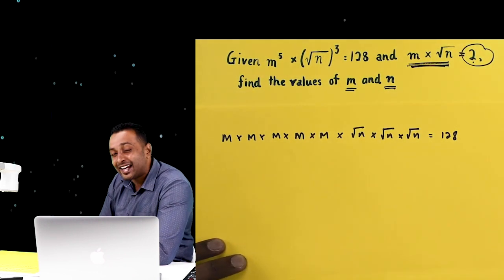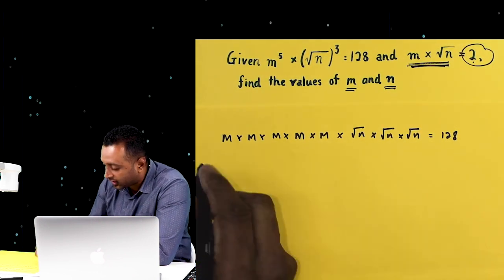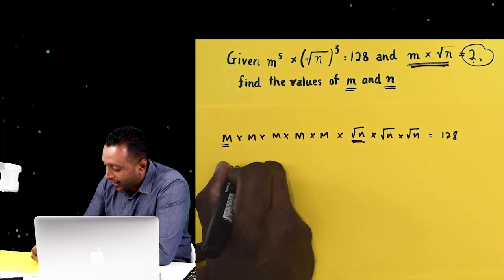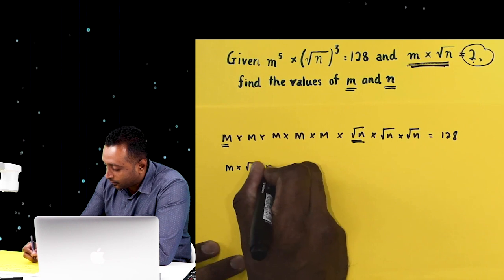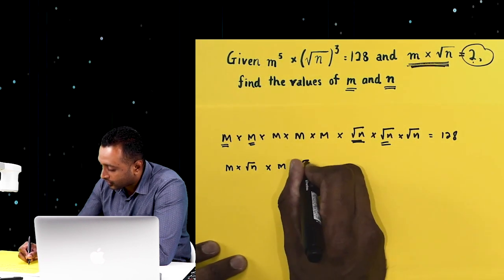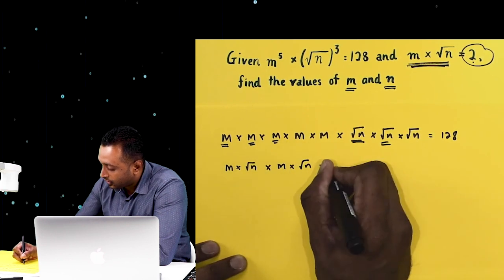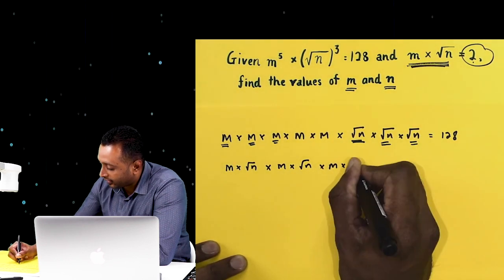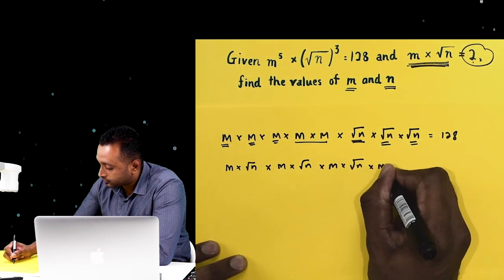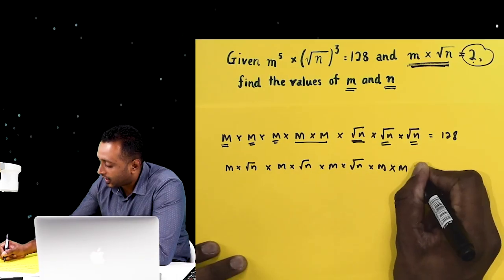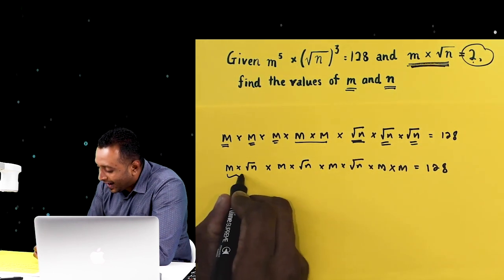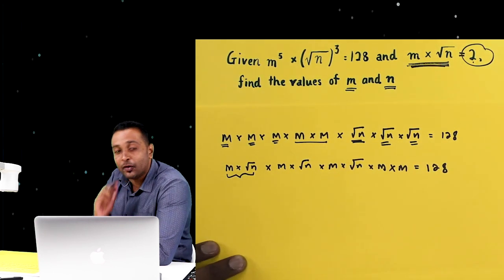Now what I'm going to do is rearrange this. I'm going to write m and square root n side by side — m times square root n, then m times square root n, then m times square root n, and leave it with m times m. The answer will be 128. Why do I arrange like this? Because I know a pattern.